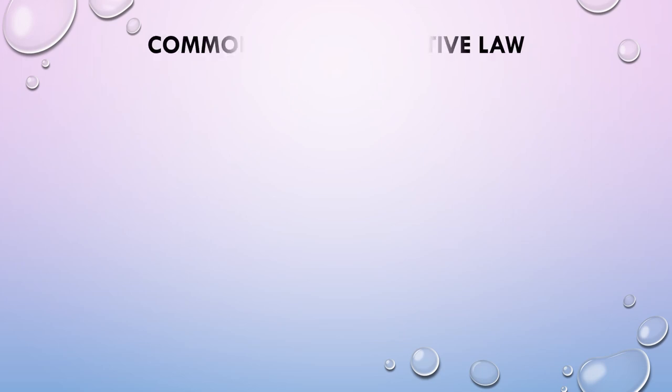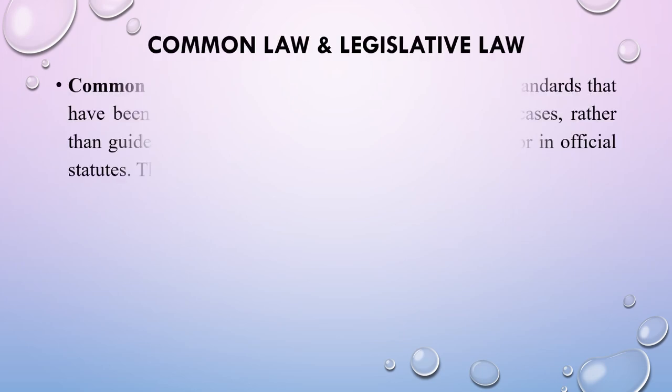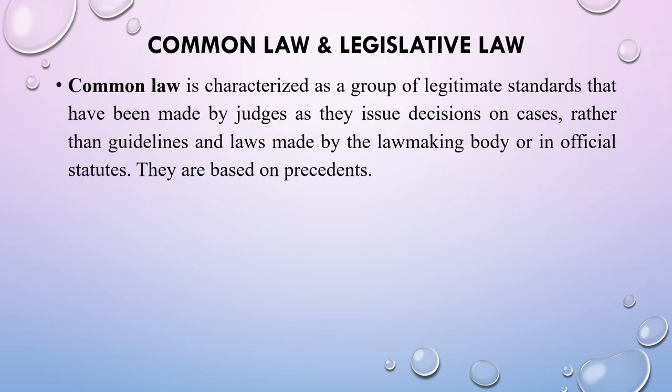Common law is characterized as a group of legitimate standards that have been made by judges as they issue decisions on cases, rather than guidelines and laws made by the law-making body or in official statutes. That means common law is based on precedent, and precedents are the previous case law out of which some principle has been laid down.